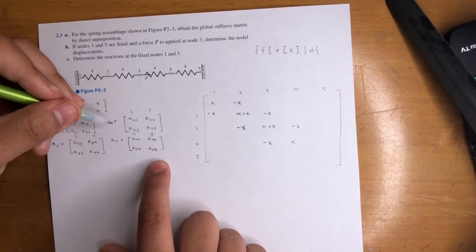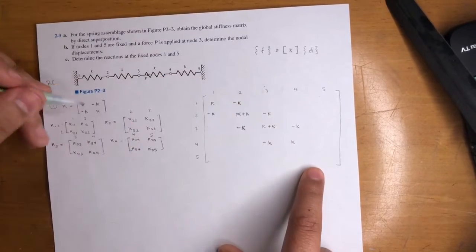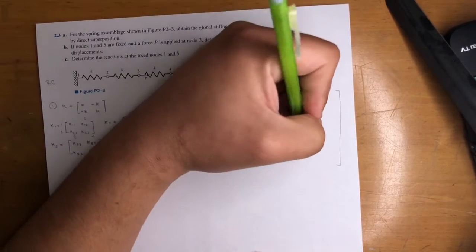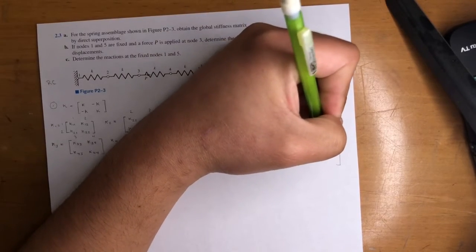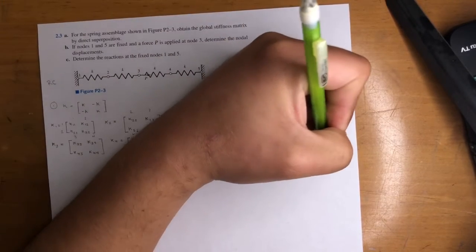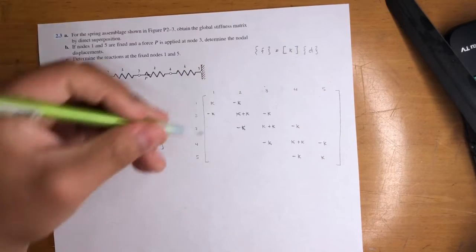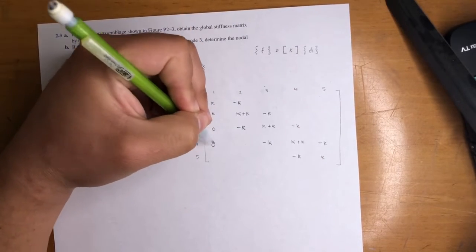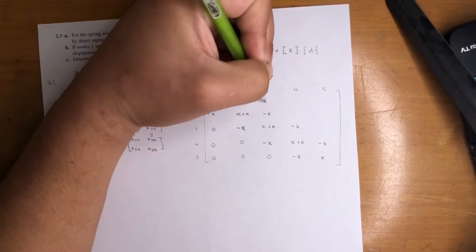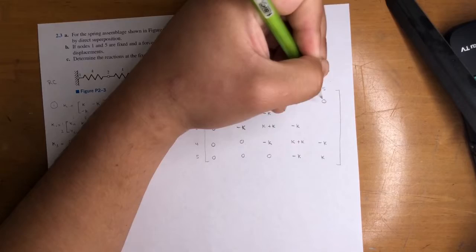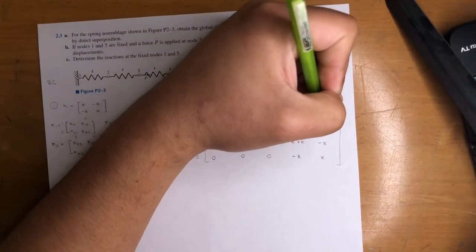And finally, K44 to K55, this little area, that's going to be K, negative K, same thing. Plus K, negative K, negative K, and K. So everything else has zeros. One, two, three, four, five, six, one, two, three, four, five, six.